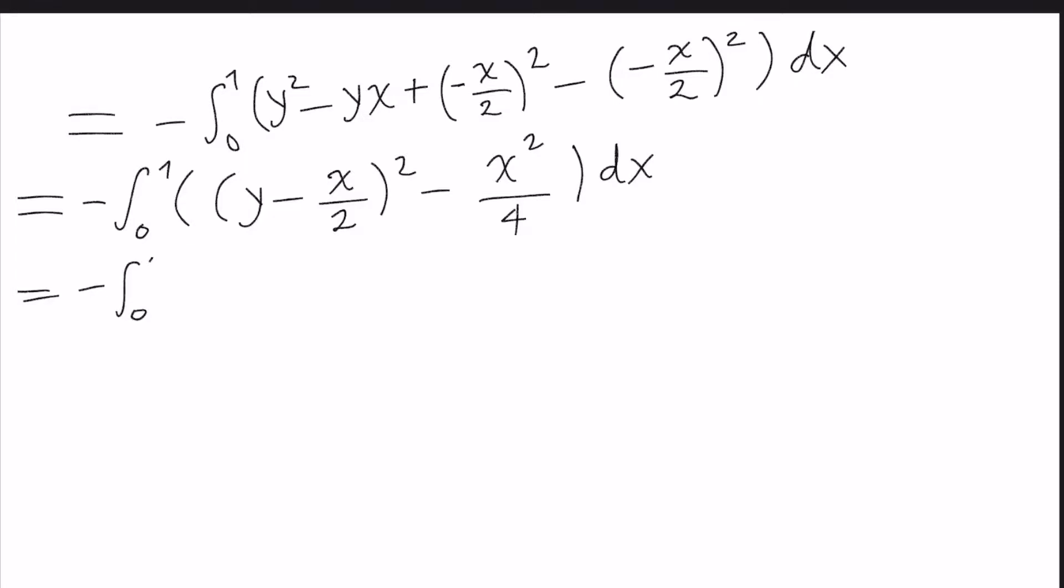This is minus integral 0 to 1 of (y - x/2) squared dx, plus integral 0 to 1 of x squared divided by 4 dx. And the last integral can be solved as x cubed divided by 12, evaluated from 0 to 1.